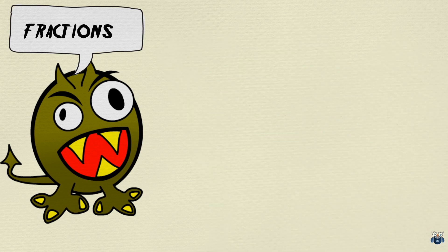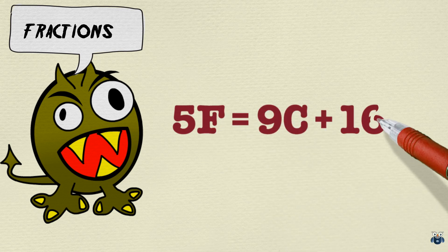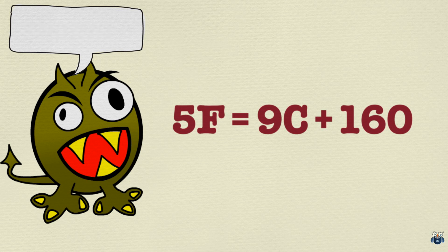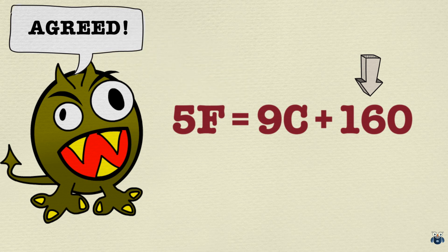So let's use some mathemagic and change this formula to make it more readable. Here we go: 5F equal to 9C plus 160. So what have we done here? The fractions have gone and 32 has changed to 160. But it is easier to remember for sure!